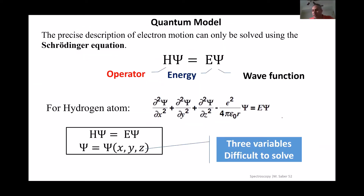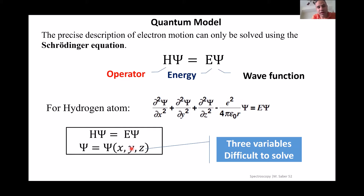To develop a better model, Schrödinger had a different approach. Since the electron moves like a wave, it can be described with a wave function. He used his Schrödinger equation to find the correct wave function ψ as a function of x, y, and z — the position of the electron around the nucleus. However, in Cartesian coordinates this wave function is very complicated, being a function of three variables.